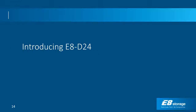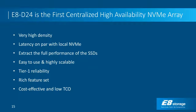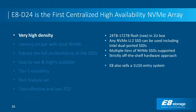The E8 D24 is a very high-density 2U unit. It starts at 24 terabytes and scales all the way to 172 terabytes raw using 6.4 terabyte SSDs. We support any NVMe SSDs, including Intel's dual-ported SSDs — and E8 is believed to be one of the only storage solutions that can take advantage of those dual-ported SSDs. We support multiple tiers of NVMe SSDs, including read-intensive and write-intensive configurations.